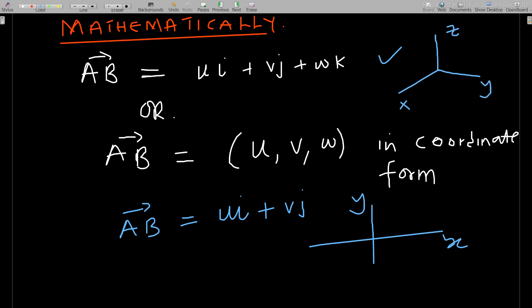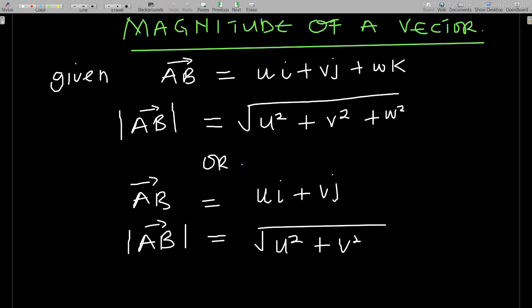Now for the magnitude of a vector — the direction is shown by the arrow indicating where the vector is moving to. If you have a vector AB equal to ui plus vj plus wk, then the magnitude, written with a single bar, equals the square root of the sum of the squares of individual components: square root of u² plus v² plus w².